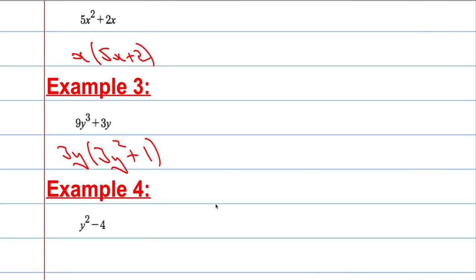Fourth example here, y squared minus 4. So you might look at this and think, oh there's nothing common. This is a special case of something that we call the difference of two squares.